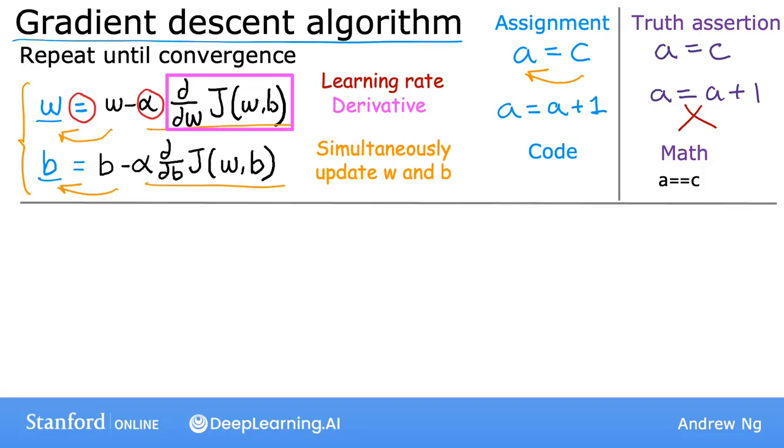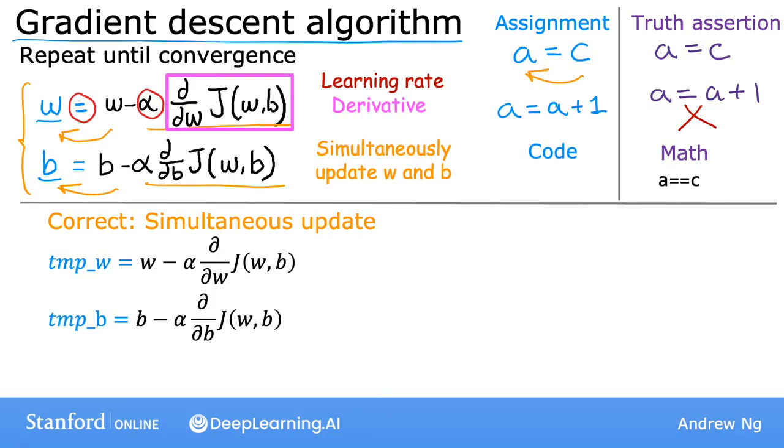So let's take a look at what this means. Here's the correct way to implement gradient descent, which does a simultaneous update. This sets the variable temp w equal to that expression, which is w minus that term here. Let's also set another variable, temp b to that, which is b minus that term. So you compute both right-hand sides, both updates, and store them into variables temp w and temp b. Then, you copy the value of temp w into w, and you also copy the value of temp b into b. Now, one thing you may notice is that this value of w is from before w gets updated. Here, notice that the pre-update w is what goes into the derivative term over here.